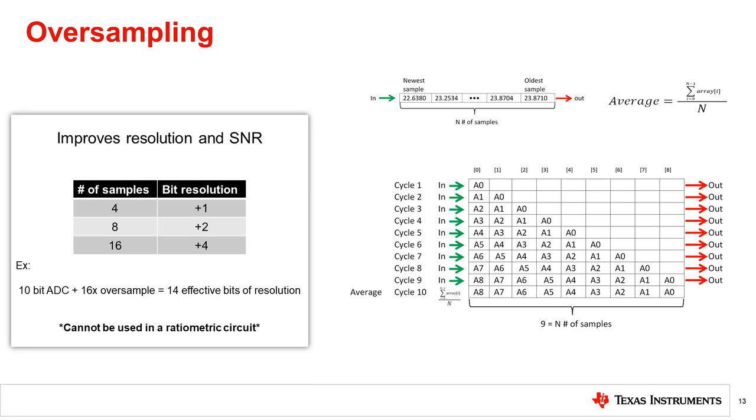Oversampling is a great way to improve resolution and signal-to-noise ratio. It works by summing multiple temperature measurements and then averaging to get a more accurate value. For each additional bit of resolution, the signal must be oversampled by a factor of 4 as seen in the table on the left. You can use any number of samples in your application to get the resolution that you need for your design as long as the number of samples are above the Nyquist rate.